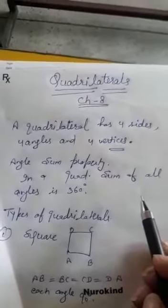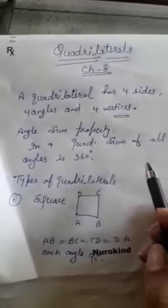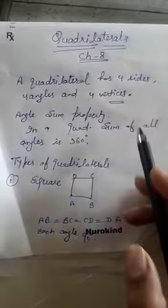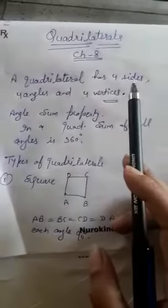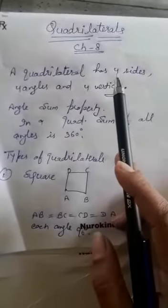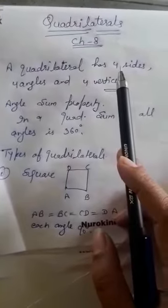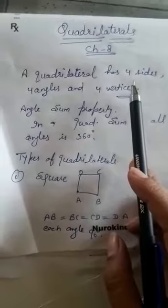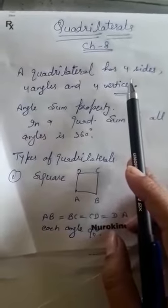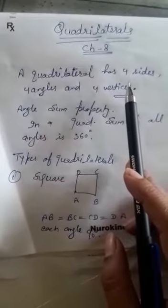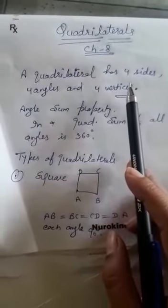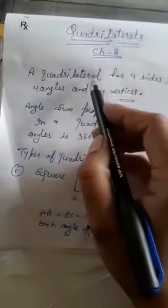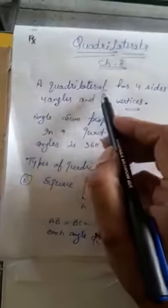Good evening students. Today we are going to start a new chapter, that is Quadrilaterals, chapter number 8. In this chapter we will discuss about the quadrilateral, types of quadrilateral, and their properties. So firstly, let us see what is a quadrilateral.